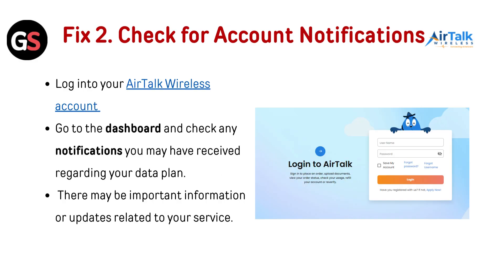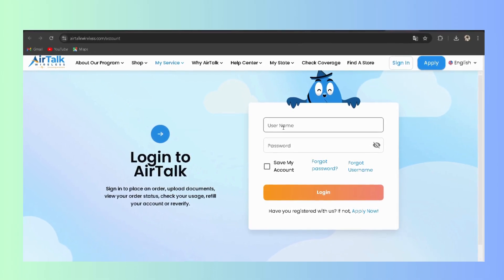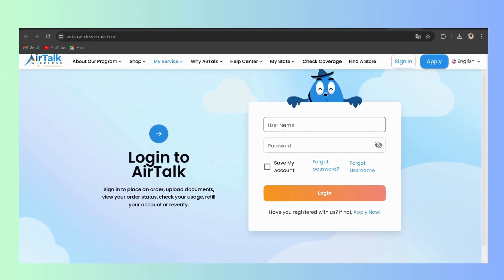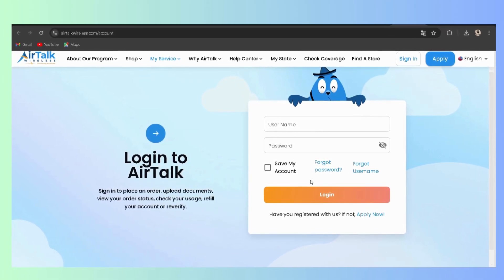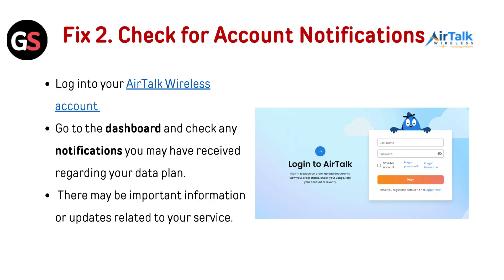Fix 2: Check for account notifications. Log in to your Airtalk Wireless account — you can go through the website directly via the link given in the description of this video. Go to the dashboard and check any notifications you may have received regarding your data plan. There may be important information or updates related to your service.